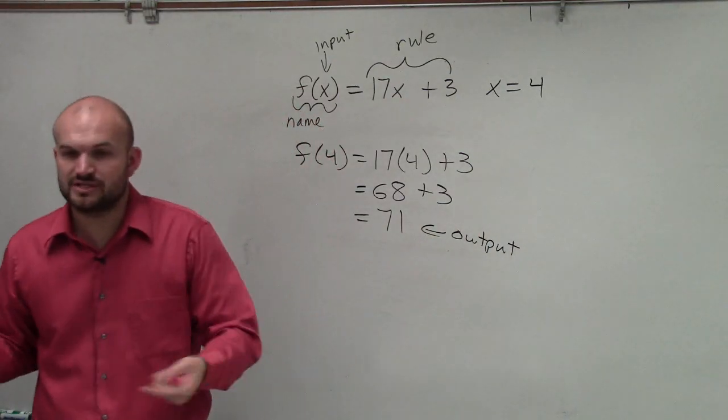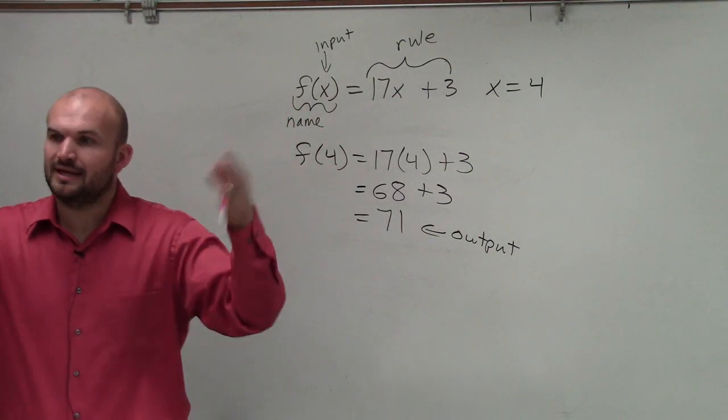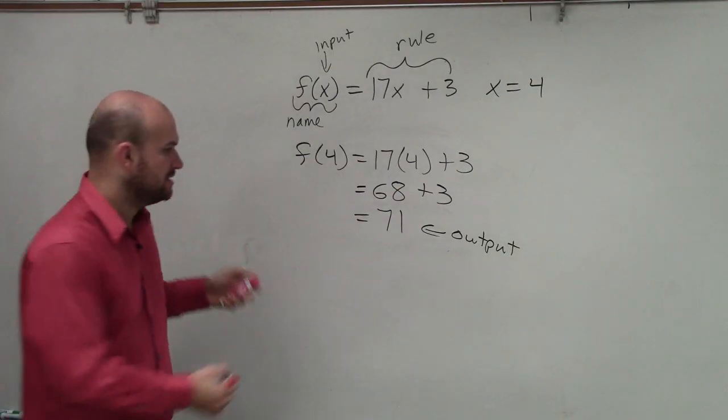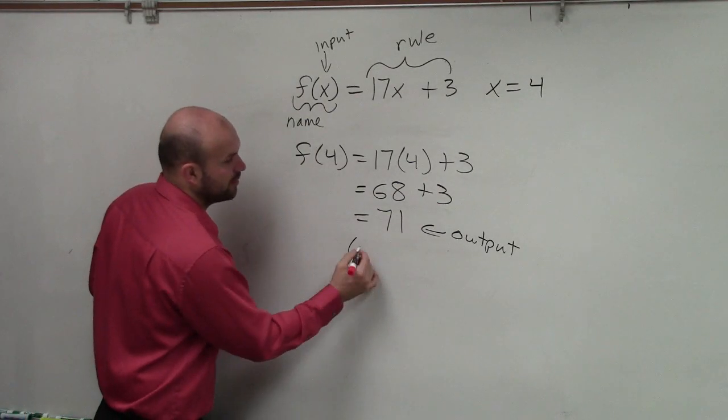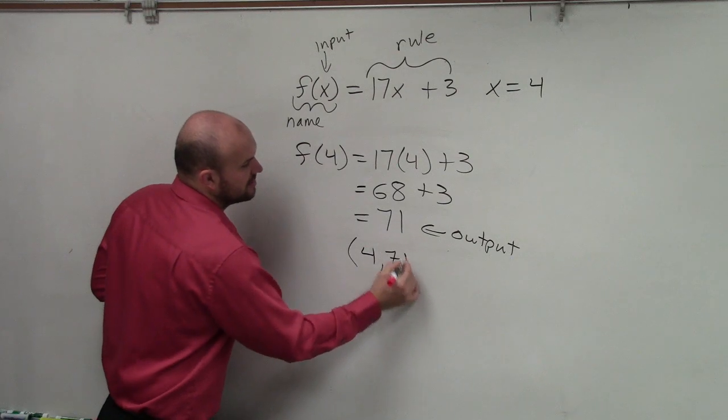Then the last part of the question says, write it as a coordinate point. Input, output. So I write it as a coordinate point of 4, 71.